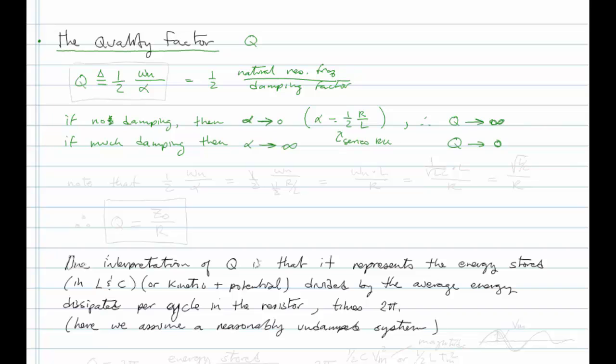Think of a tuning fork — there's actually a quality factor defined for a tuning fork. This is not strictly an electrical quantity; it is characteristic of any second-order oscillatory system. A tuning fork has a spring constant based on the stiffness of the metal and a mass. When you strike it, you give it energy, which interchanges between kinetic energy in the motion of the mass and potential energy in the stiffness. That energy is exchanged back and forth and over time it dissipates. A good tuning fork has a very high quality factor.